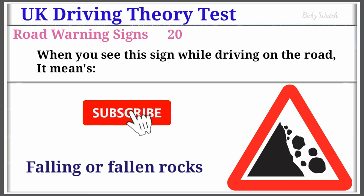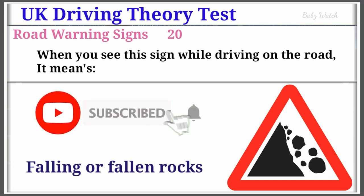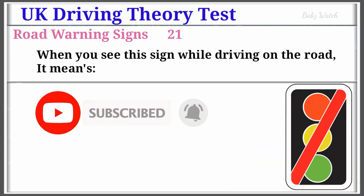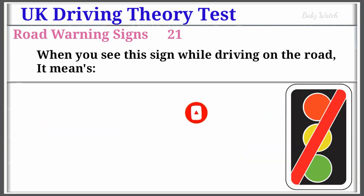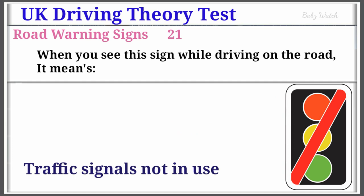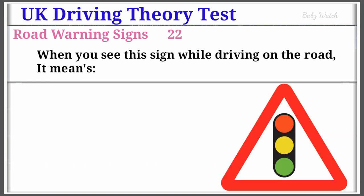UK Driving Theory Test Road Warning Sign Number 21: When you see this sign while driving on the road, it means Traffic Signals Not in Use. Warning Sign Number 22: When you see this sign while driving on the road, it means Traffic Signals.